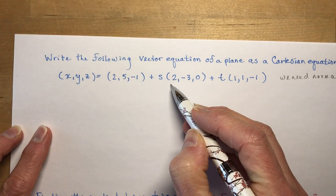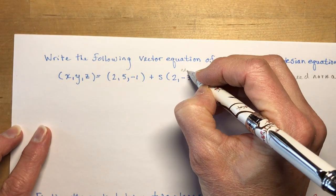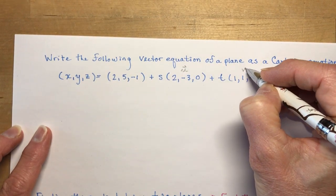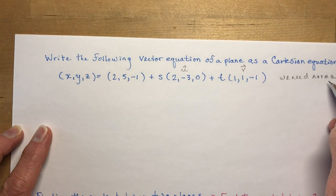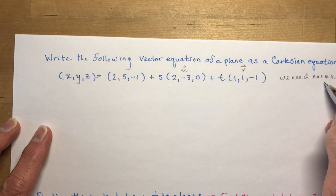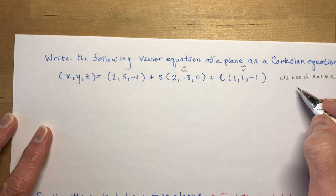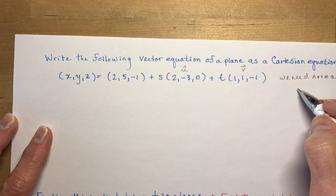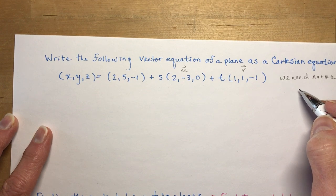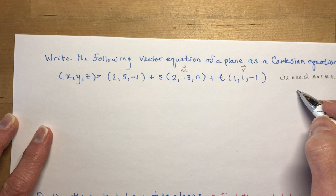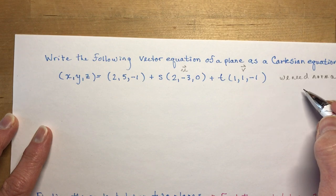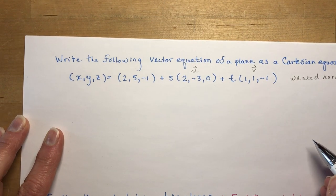If you have two direction vectors, so this is my u and this is my v. And if we want to know the normal, then I have to take the cross product to find the normal vector. That will give us ABC. Then we will sub in the point ABC and you find d and you're done.